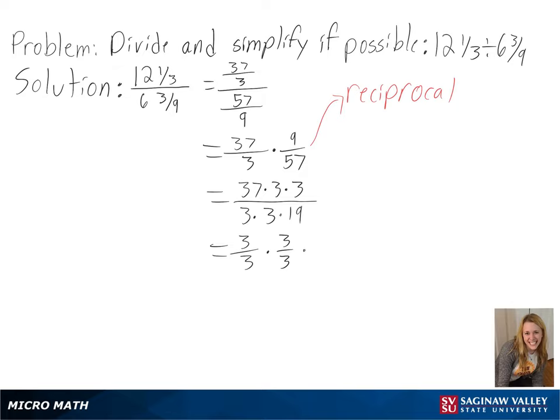After this we are left with 37 over 19. Then we can use long division to convert back into a mixed number and get 1 and 18 over 19 as our final answer.